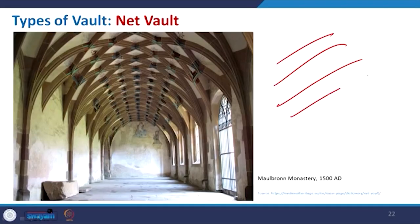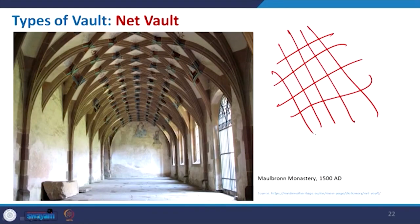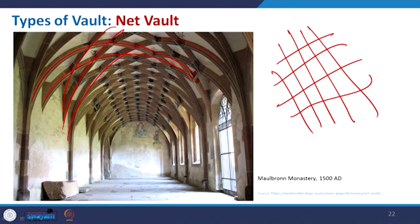The net vault is something like a net — a checker-box pattern where multiple curvatures just cross each other to create this kind of net. This is an example of the net vault.